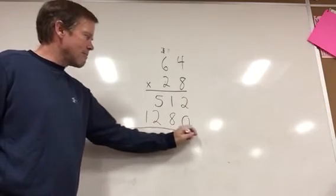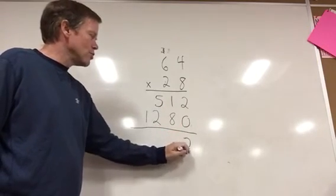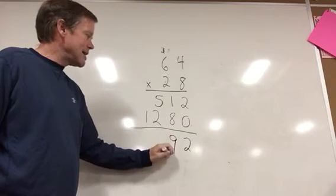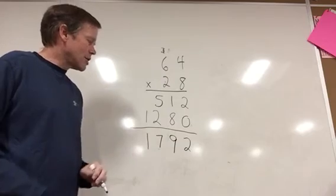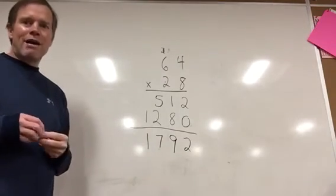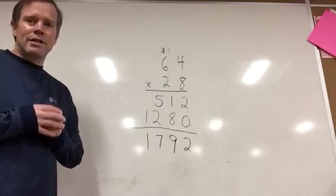And then the next step is to add them. You get 2. You get 9. And then we add this. We get 7. And we get 1. So 1,792.